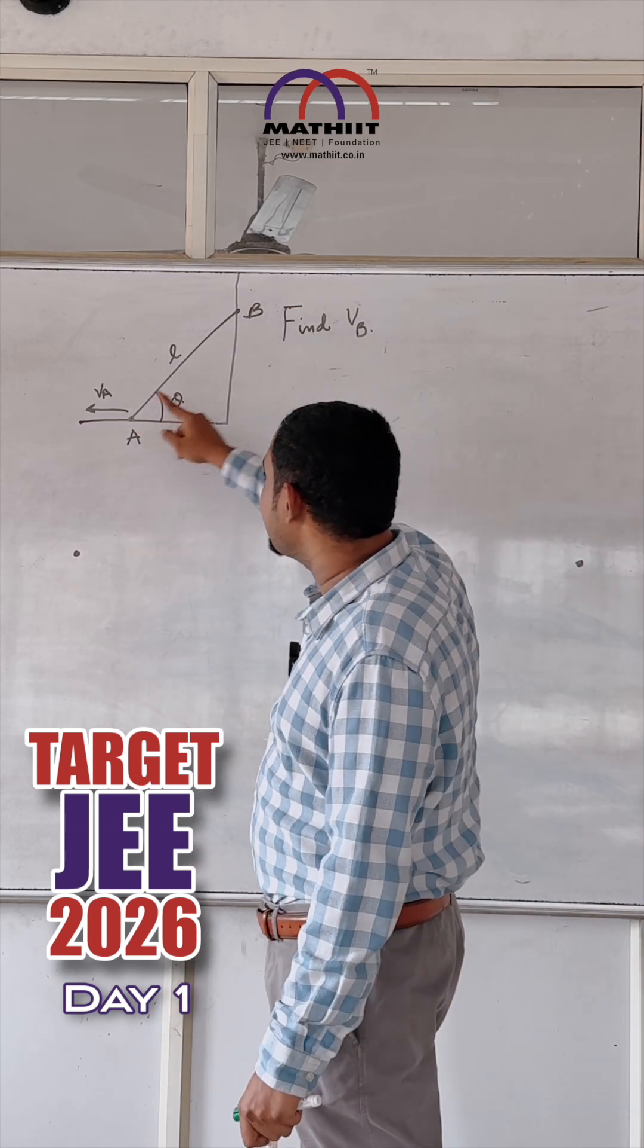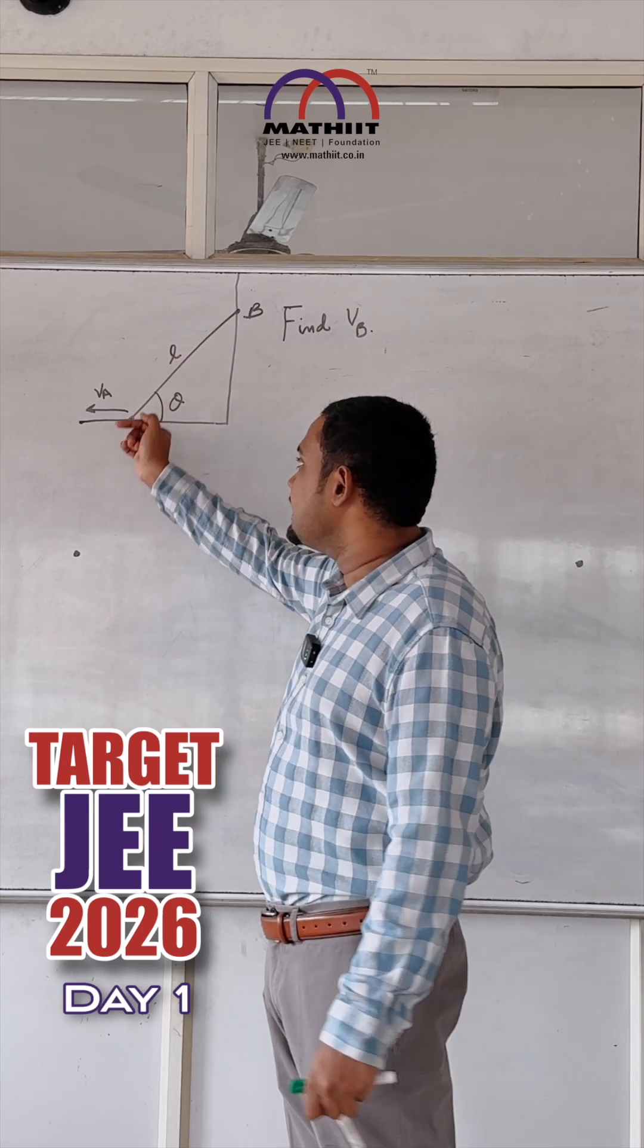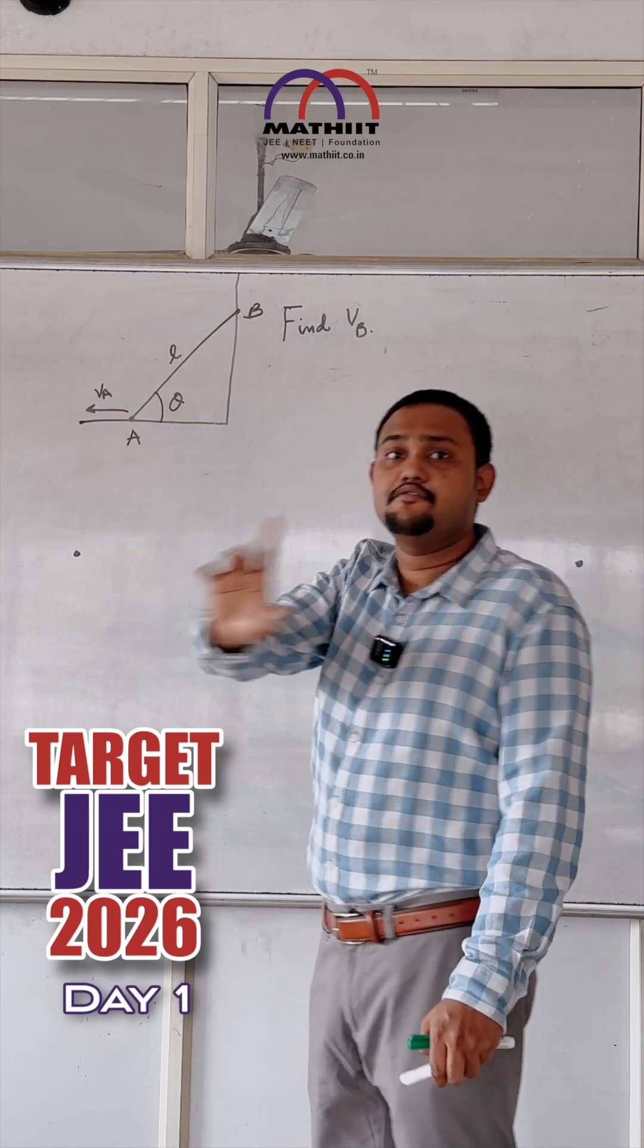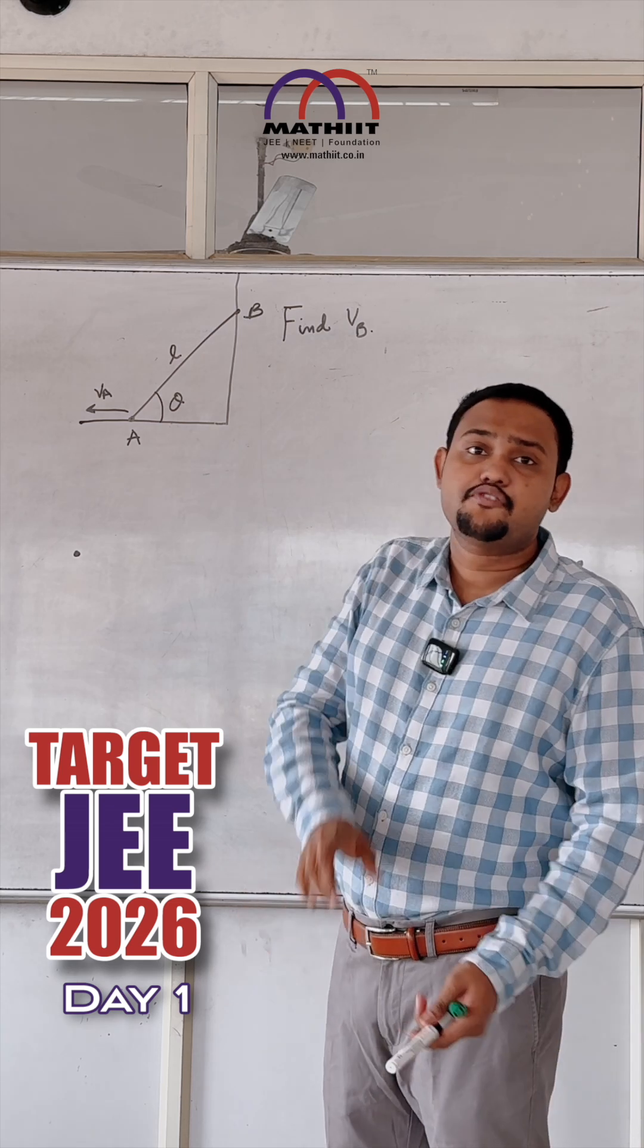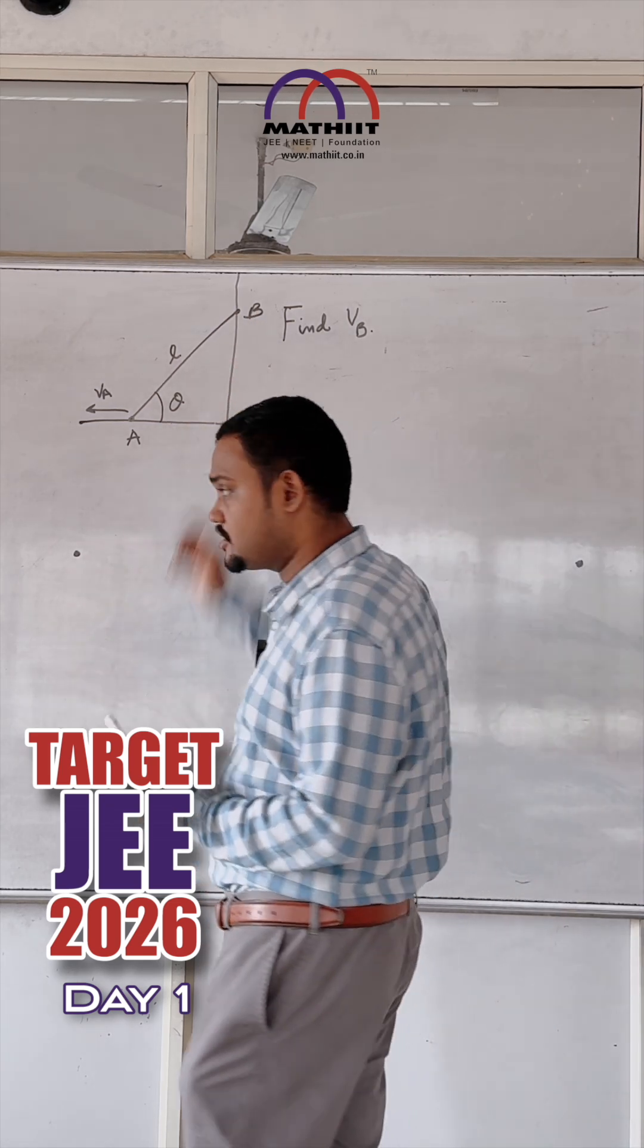There is a rod like this making an angle theta and the length of the rod is L. Point A has horizontal velocity VA. We need to find what is going to be the velocity of VB, the velocity of B.